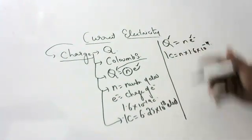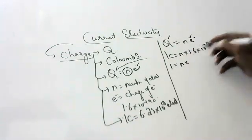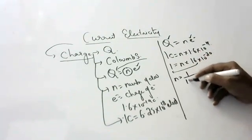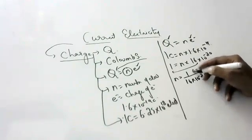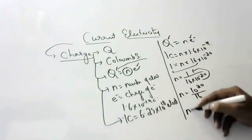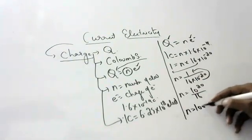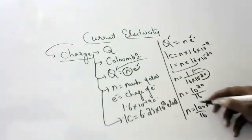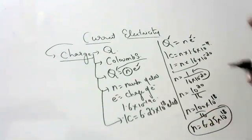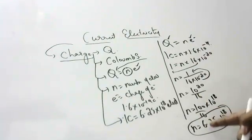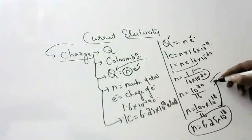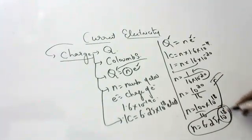So, 1 equals N into 1.6 into 10 to the power of minus 19. Rearranging: N equals 1 divided by 1.6 into 10 to the power of minus 19, which gives 10 to the power of 19 divided by 1.6. Simplifying, N equals 10 to the power of 18 divided by 0.16, which equals 6.25 into 10 to the power of 18. So one Coulomb will have 6.25 into 10 to the power of 18 electrons going into the conductor.